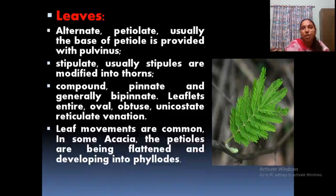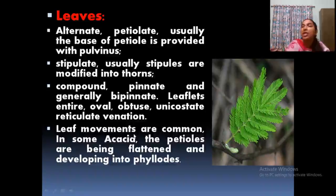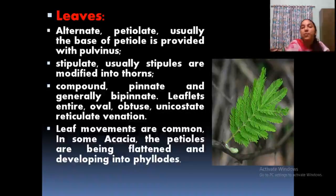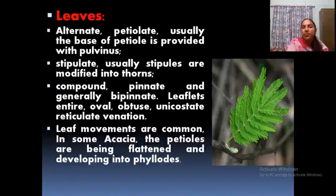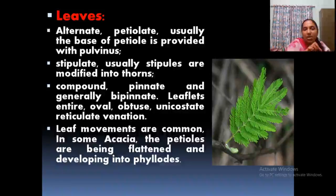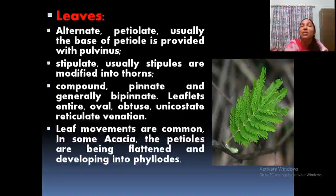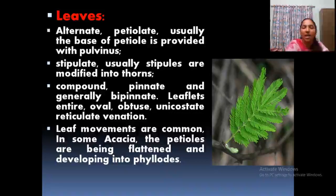Compound leaves are usually pinnate — bipinnate on both sides. Compound bipinnate leaves with reticulate venation. Leaf movements are common, as seen in Acacia. In Acacia, some structures called phyllodes are present — the petioles are flattened and develop into phyllodes, a special structure. What you actually see in Acacia as the leaf is really the modified petiole, known as a phyllode.